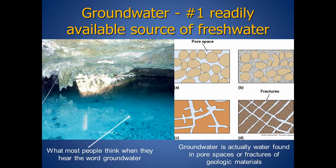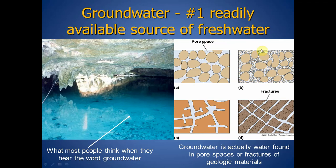Let's start by looking at groundwater — the number one readily available source of freshwater on Earth. When most people hear this word, they picture water in underground rivers and caverns. While technically that is groundwater, the majority is actually the water found in empty pore spaces between geologic materials if unconsolidated, or in cracks and fractures in solidified rocks. In fact, 99% of groundwater is found in pore spaces; only about 1% is in underground rivers and lakes.